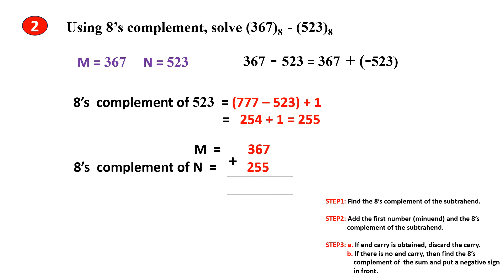Step 2: Add the Minuend 367 with the 8's Complement of the Subtrahend, 255. 7 plus 5 gives 12; 12 is not an octal number, so divide by 8 to get quotient 1 and remainder 4. Write 4 as the sum and carry 1. Next, 6 plus 1 is 7, plus 5 is again 12; again we get remainder 4 and carry 1. Next, 3 plus 1 is 4, plus 2 is 6. So the result is 644.